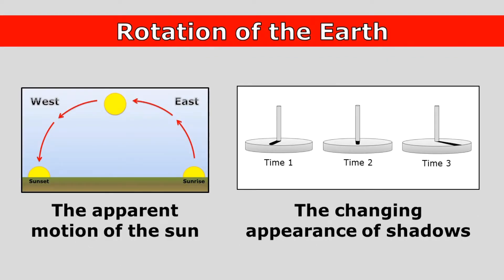The rotation of the earth also causes the apparent motion of the sun. Each day the sun appears to rise in the east and set in the west, but the sun isn't really moving across the sky. The sun appears to move because the earth is rotating. And as light from the sun strikes objects from different angles, we see the appearance of shadows change.